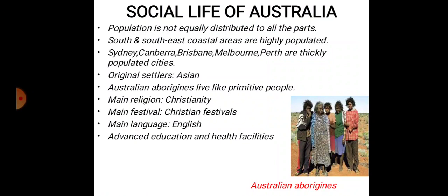The most populated areas of Australia are the south and southeast coastal areas, which mainly include cities like Sydney, Canberra, Brisbane, Melbourne, and Perth. These are the thickly populated cities lying along the south and southeast coastal areas of Australia.